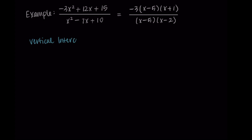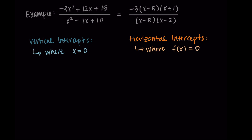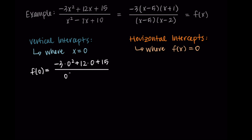Now we find the vertical intercepts, horizontal intercepts, and the domain. For vertical intercepts, x equals 0. Using the standard form: negative 3 times 0 squared plus 12 times 0 plus 15, divided by 0 squared minus 7 times 0 plus 10. All the first terms go to 0, leaving just 15 over 10, which simplifies to 3 over 2. So the vertical intercept is at the point 0, 3 over 2.